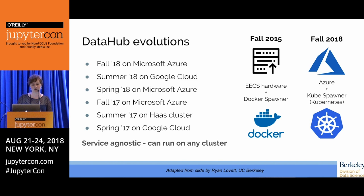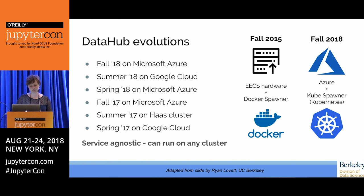DataHub has evolved pretty much every single semester since it was first used in Data 8 in fall 2015. It's gone from hardware in the EECS department on campus to Google Cloud clusters, to Microsoft Azure, to AWS and back again, and scales up rapidly every semester. In fall 2015 there were approximately 80 users on the EECS hardware. Now in fall 2018 there will be upwards of 2,500 users on our DataHub, dynamically managed by Kubernetes on Azure clusters.